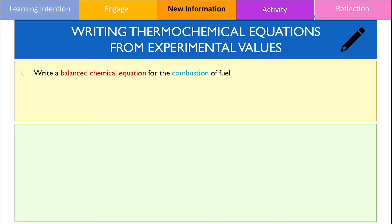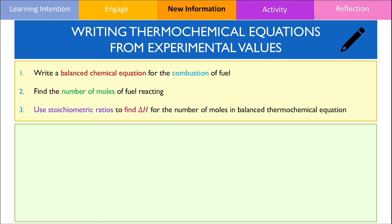I won't teach you how to balance chemical equations because this should already be prior knowledge. After this step, we're going to calculate the number of moles of fuel reacting from the specified mass given from the question. Finally, we can calculate the change in enthalpy using mole ratios. The change in enthalpy should take on a negative value because the combustion of fuel is an exothermic process.